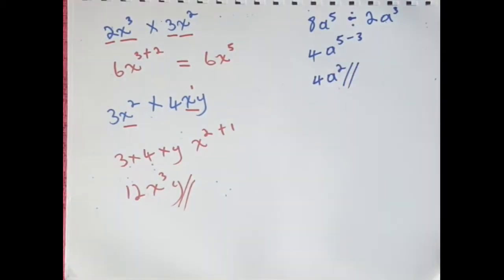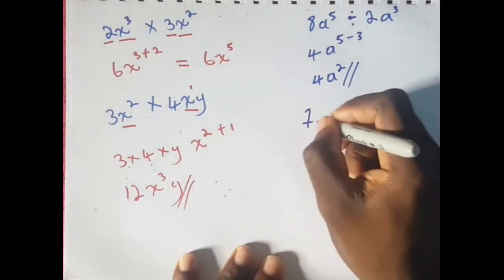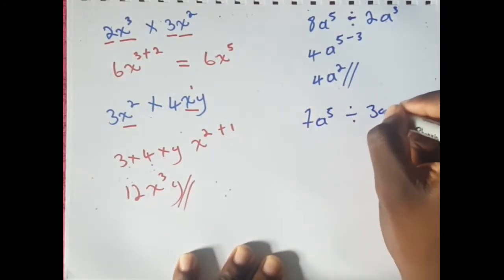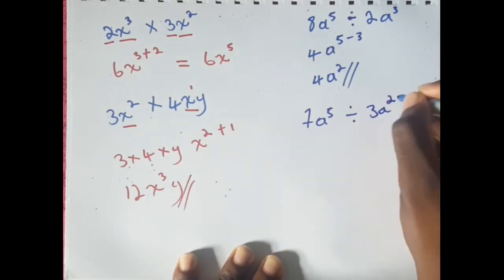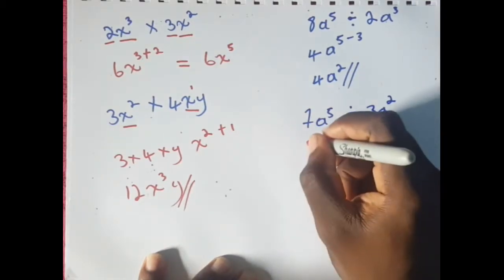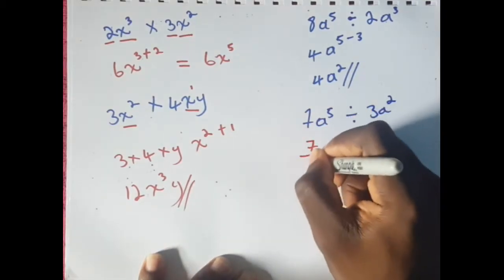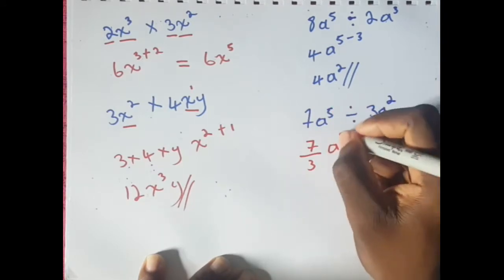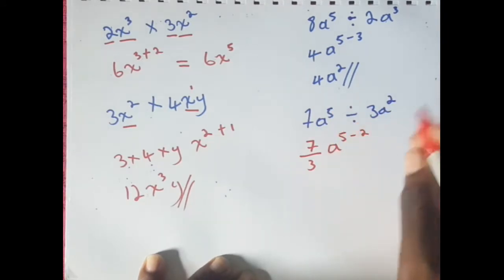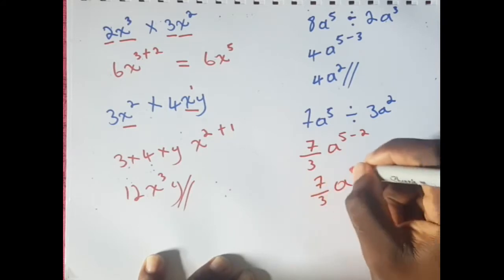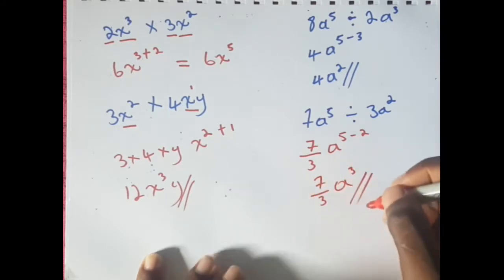For our next division question, say we have 7a raised to the 5th power divided by 3a raised to the 2nd power. First we divide the coefficients, so we would have 7 divided by 3, and a — which is the base — raised to the power of 5 minus 2, which would be 7 over 3, times a raised to the 3rd power for the final answer.